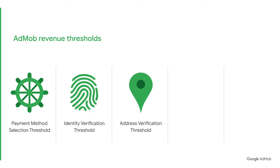3. Address Verification Threshold. When you reach this threshold, we'll mail a PIN number to your payment address to verify the accuracy of your account information. When you receive your PIN, please enter it in your account.